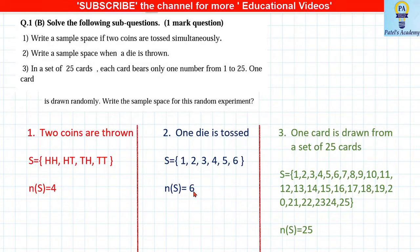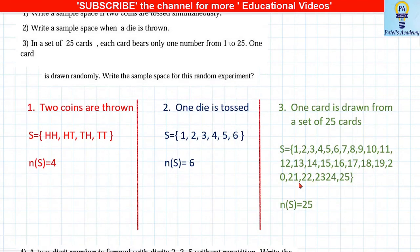In a set of 25 cards, each bearing one number from 1 to 25, one card is drawn at random. The sample space is all numbers from 1 to 25. For marks, make sure you write down all the numbers — don't just write 1, 2, 3, 4 ... 25.